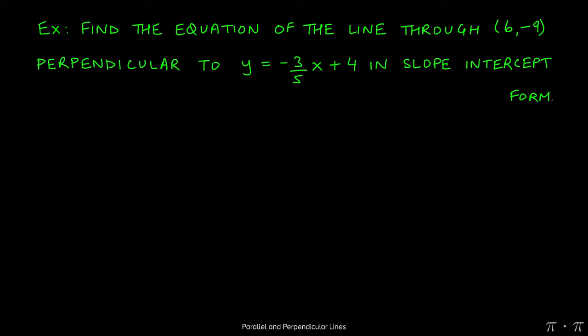In this question, we're asked to find the equation of the line through the point (6, -9), but we want it to be perpendicular to this given line, y = -3/5x + 4, and also in this question we're told that we have to give the answer in slope-intercept form.